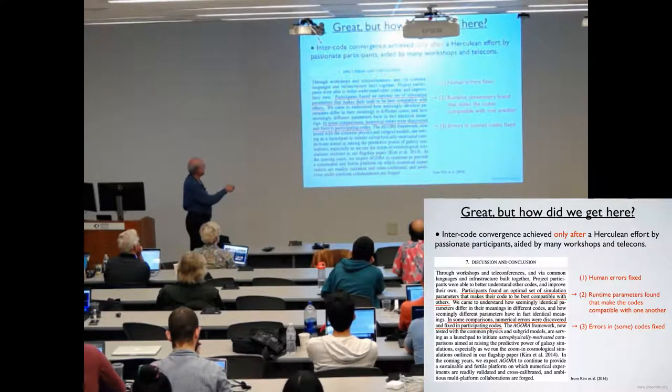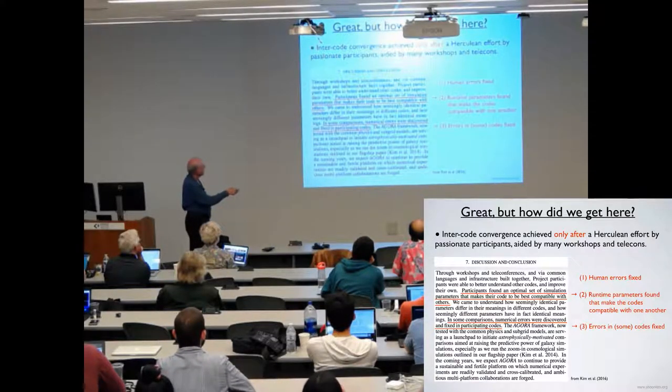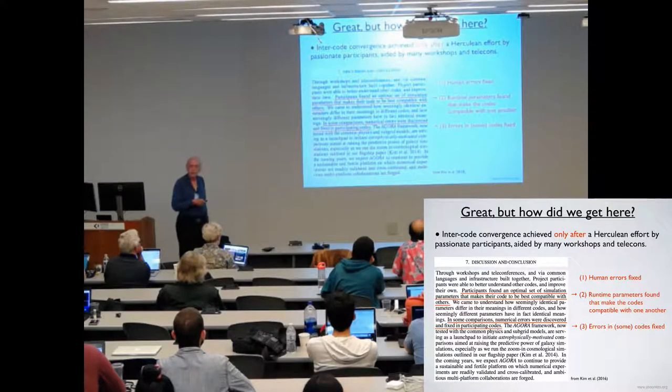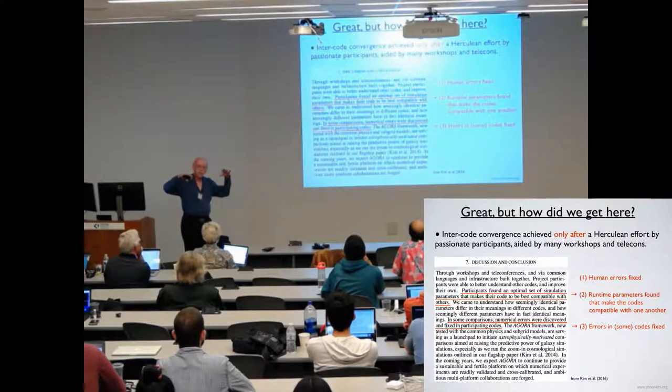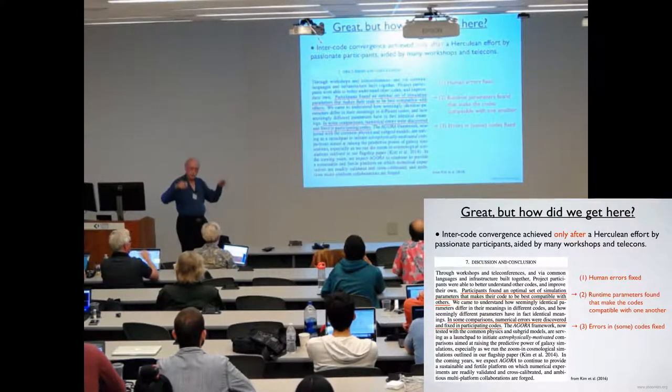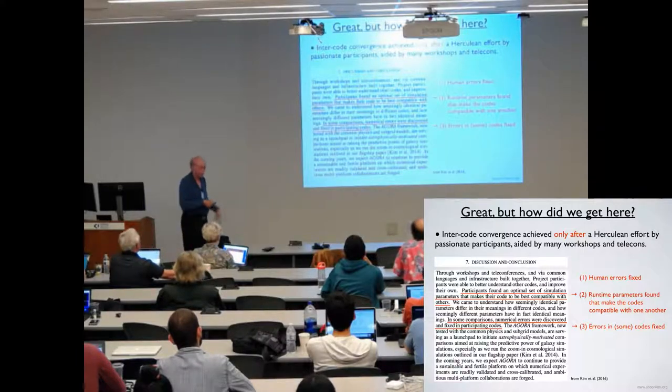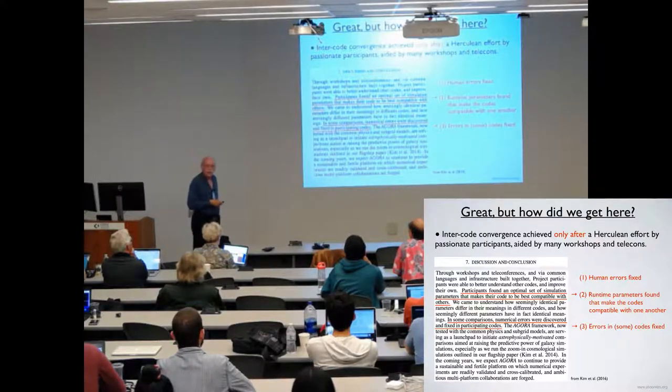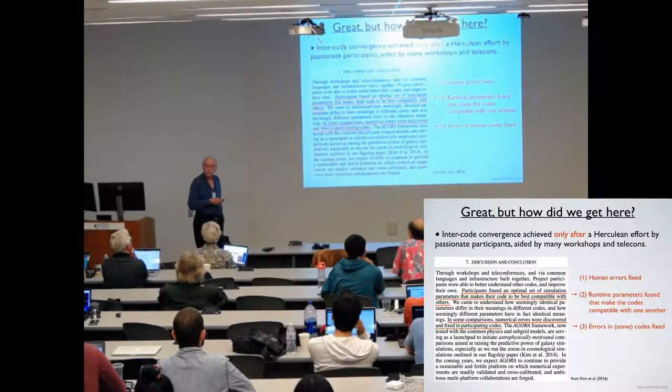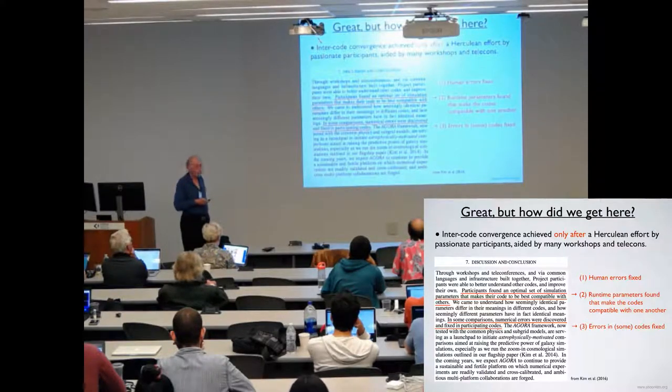Participants found an optimal set of simulation parameters that make their codes compatible. It turned out that we ran all the codes three times, and in a few cases four times. And the second time, the thing is that we wanted to have similar star formation rates and so forth, and it turned out that the initial assumptions that were made, the parameters that were adjusted, had to be readjusted to get those things to work out right. And I think virtually all the code teams found, when they did careful comparisons, that they could correct errors or improve their code. So this is, I think, something that has been very useful for all the codes involved.